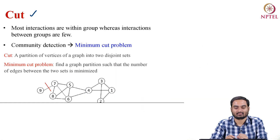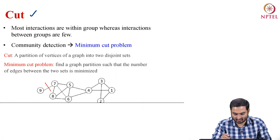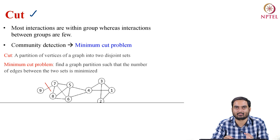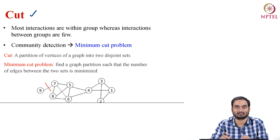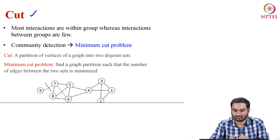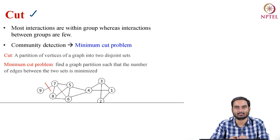The first one is cut — I am sure you have heard about this terminology before. It is called cut, and the min-cut problem particularly. A cut is basically a partition of nodes of a graph into disjoint sets.